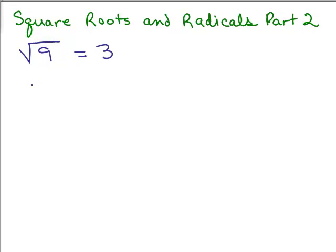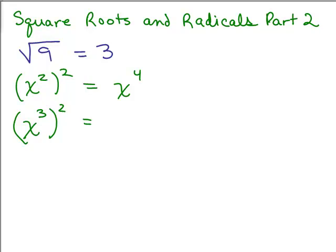Now we're going to look at some variables. If we square x squared, using the laws of exponents we multiply the exponents, so that's x to the fourth. Or if we take x cubed and square it, using the law of exponents we write the base and multiply the exponents to get x to the sixth. You can do this for any number.